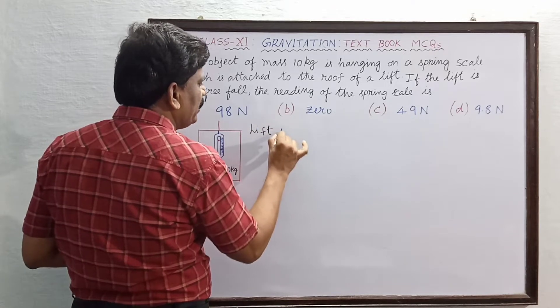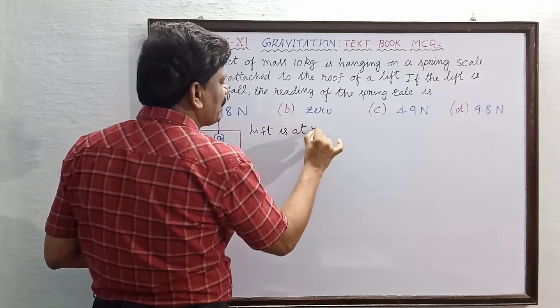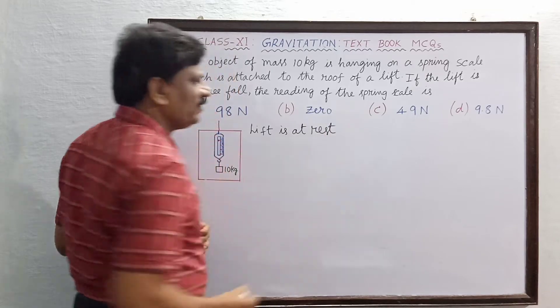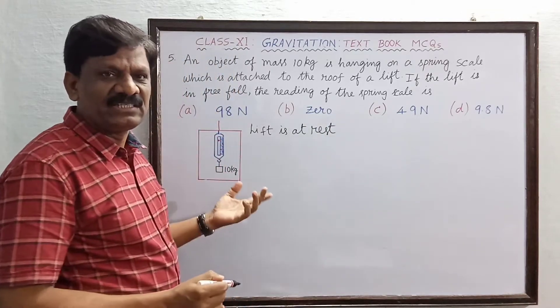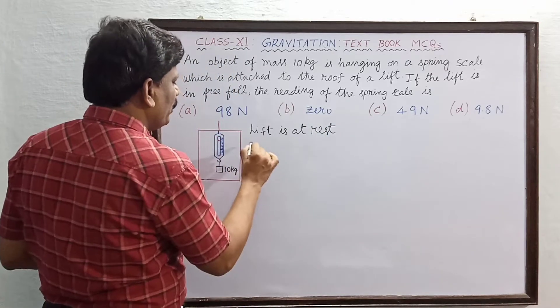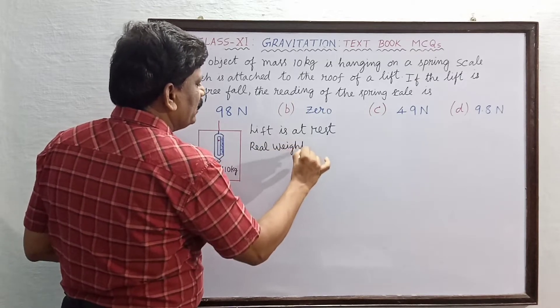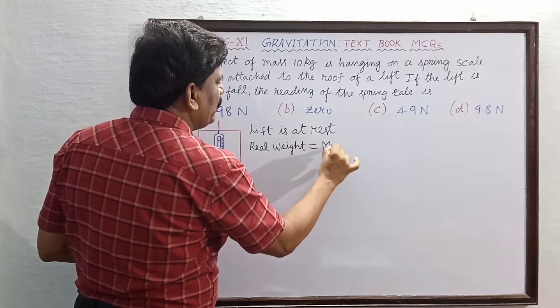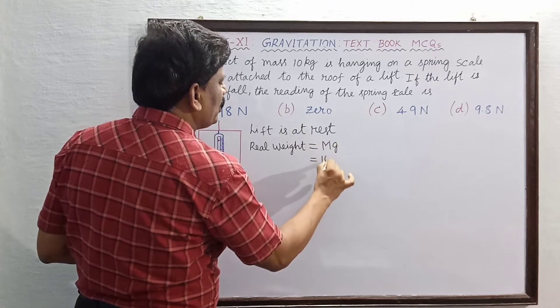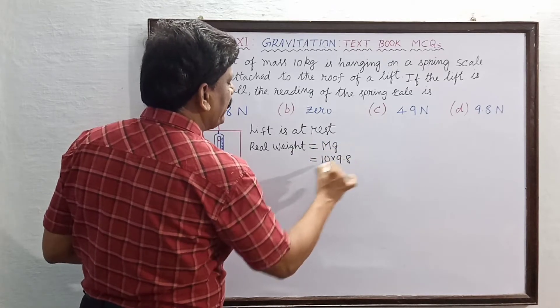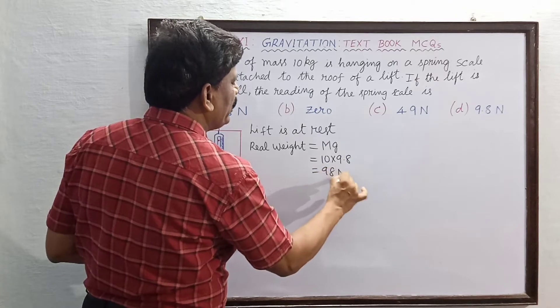Lift is at rest, we will discuss this. Lift is at rest, acceleration is equal to 0. So, real weight is equal to m into g, that is equal to 10 into 9.8, that is equal to 98 newton.